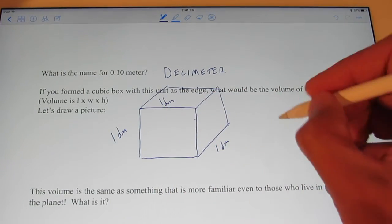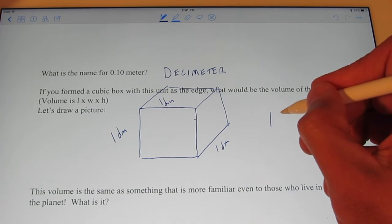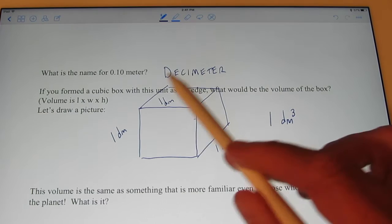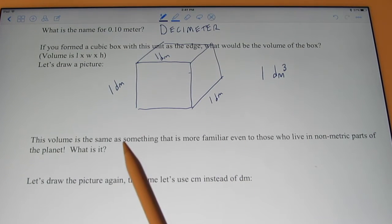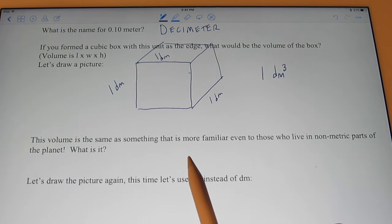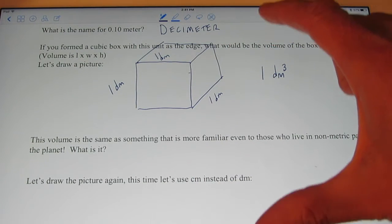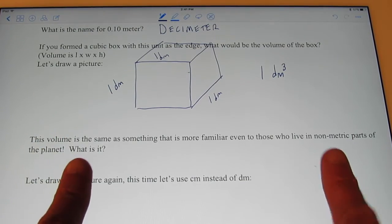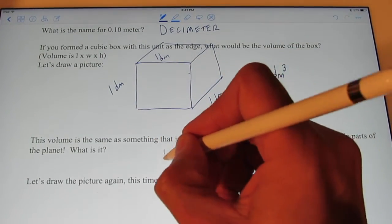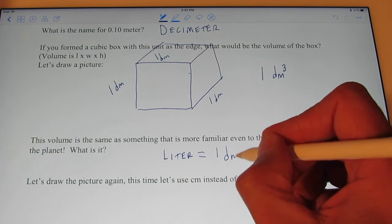One times one times one is one still, and the unit is decimeter cubed. So, the volume of this box would be one cubic decimeter. Now, it just so happens that that volume is the same as something that is more familiar to us. A cubic decimeter is about a decimeter tall, wide, and deep. We call that a liter.